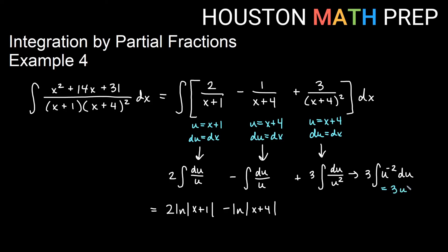We would have u to the negative 1 because the power goes up by 1, and then we divide by the new power, negative 1. So that's going to change the sign, and we'll end up with minus 3 over u, which is minus 3 over (x plus 4), plus c.